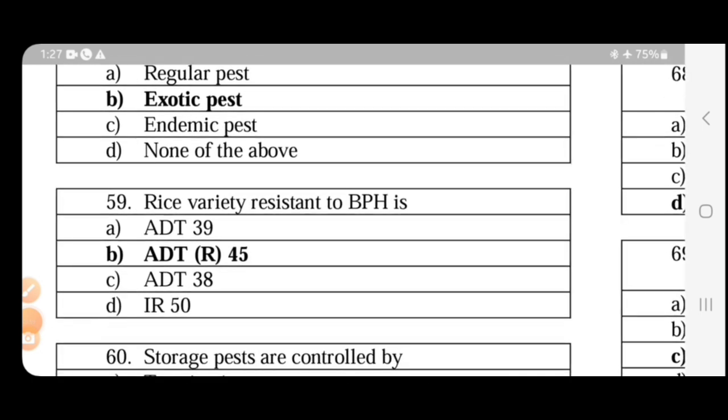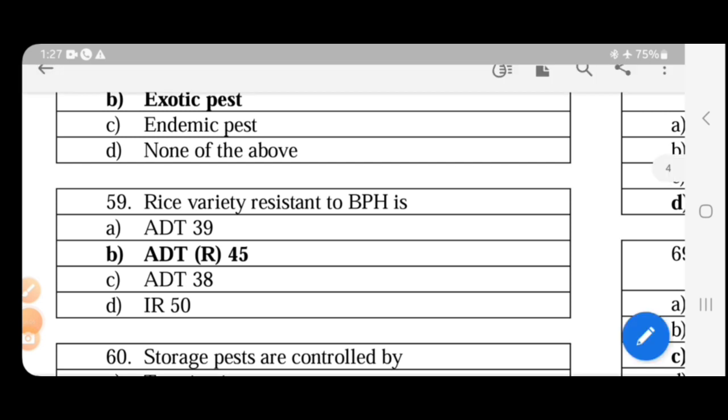Rice variety resistant to BPH is ADT (R) 45. This is resistant to BPH. BPH is brown planthopper. The scientific name is Nilaparvata lugens. This causes grassy stunt, ragged stunt, and wilted stunt. This is a vector. And the main symptom is the hopper burn symptom, the most important symptom.